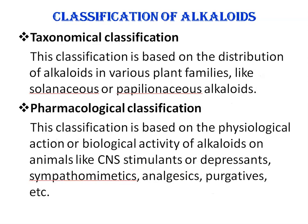Next is classification of alkaloids. First is taxonomical classification, which is based on the distribution of alkaloids in various plant families — for example, solanaceous alkaloids present in family Solanaceae, or papilionaceous alkaloids present in family Papilionaceae. Sometimes they are grouped as per the name of the genus in which they occur; for example, ephedrine present in genus Ephedra, then cinchonine present in the plant Cinchona, etc.